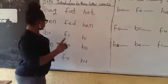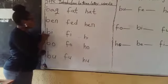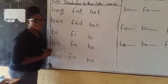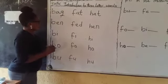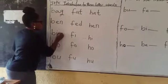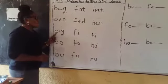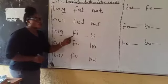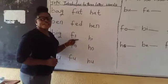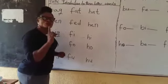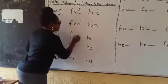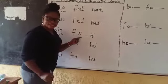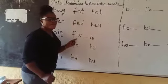Now let's go to i. Now we blend it: big. Again. Big. Let's use a letter to get a three-letter word. Now let's use g — g-g-g. It becomes the word big. Again. Big. Good. Let's go to fi. Now this is what? Fi. Now let's use another consonant — x. So blend it: fix. Again, fix. Again, fix.